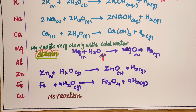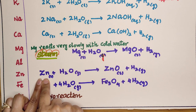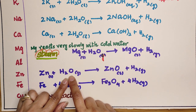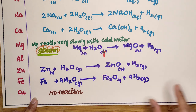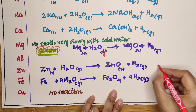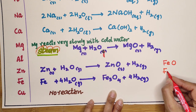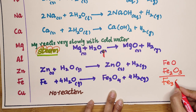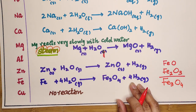Zinc has no reaction with cold water, but reacts with hot water (steam) to produce zinc oxide and hydrogen gas. Iron also reacts with steam to produce iron oxide and hydrogen gas. Iron can have Fe²⁺ or Fe³⁺ valency, forming FeO, Fe₂O₃, or collectively Fe₃O₄. The least reactive metals — copper, mercury, silver, gold, and platinum — have no reaction with water at all.